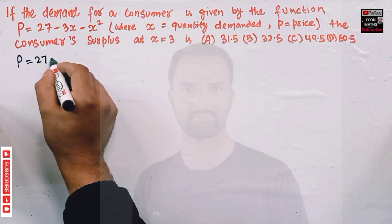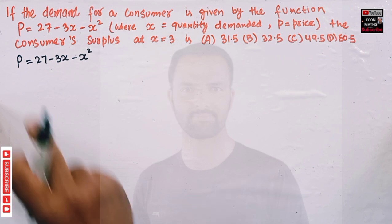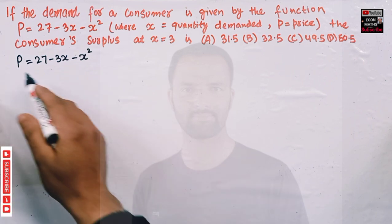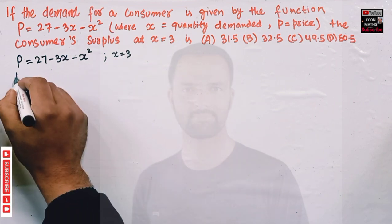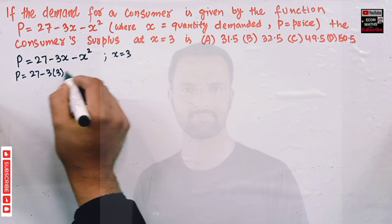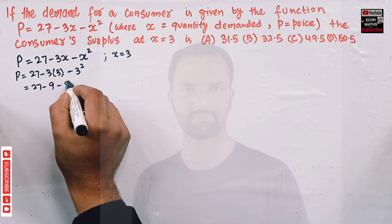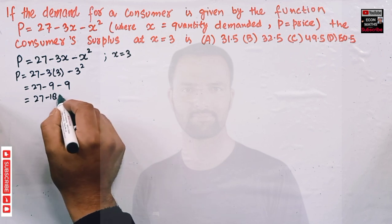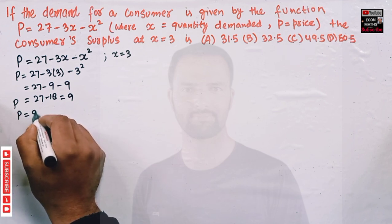Our inverse demand function is p = 27 - 3x - x². To calculate consumer surplus, we first need to find the equilibrium price. We are given x = 3, so plug x = 3 into the equation: p = 27 - 3(3) - 3² = 27 - 9 - 9 = 9. So the equilibrium price is p = 9.